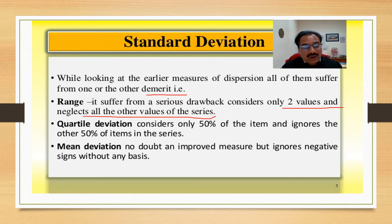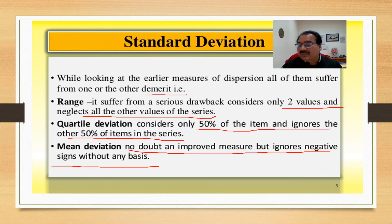While the quartile deviation considers only 50% of the item and ignores the other 50% of items in the series. What is the mean deviation? No doubt an improved measure but ignores negative signs without any basis.